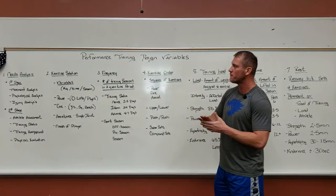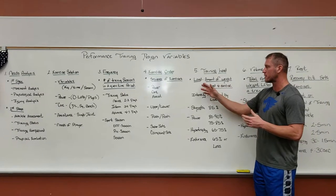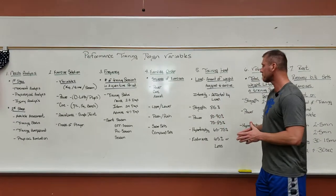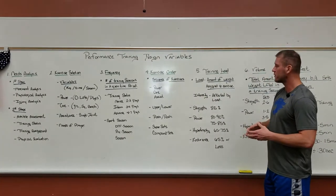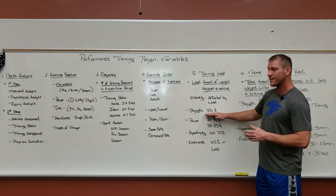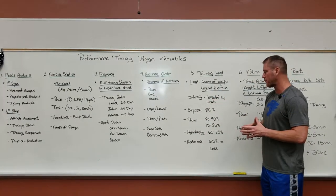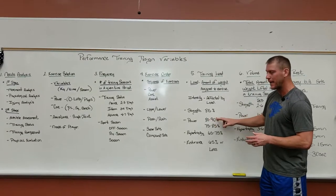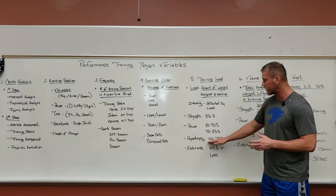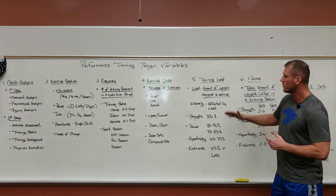Once we've covered our needs analysis, exercise selection, frequency, and exercise order, we move to our training load — the amount of weight assigned to a particular exercise. Intensity affects the load: developing strength is usually 85% or above; developing power with Olympic lifts falls into two categories — 80% to 90% for one movement, and 75% to 85% for Olympic lifting sets; adding size to our athletes is 65% to 75%; and if our athlete needs endurance work, usually about 65% or less.